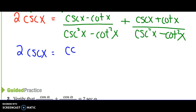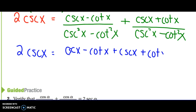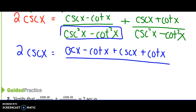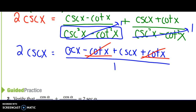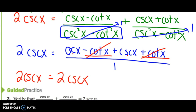Since the bottoms are the same, I can combine the tops: cosecant x minus cotangent x plus cosecant x plus cotangent x, all over the common denominator. Using the Pythagorean identity, cosecant squared x minus cotangent squared x equals 1, so the denominator simplifies to 1. The minus cotangent and plus cotangent cancel out, leaving cosecant x plus cosecant x, which is 2 cosecant x. Both sides are equal — box it, we're done.